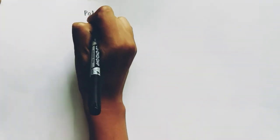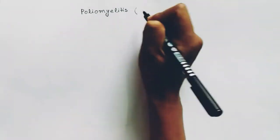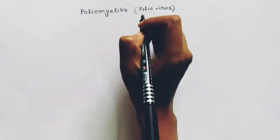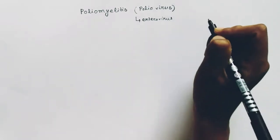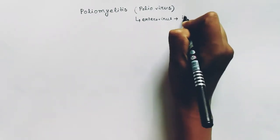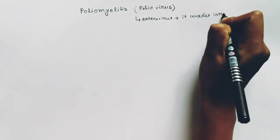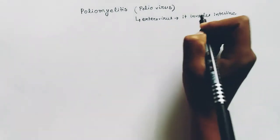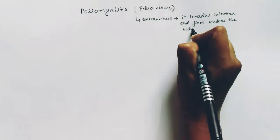In this video we are going to talk about poliomyelitis. It is a disease caused by the poliovirus. This poliovirus is a RNA single-stranded virus and it is also called enterovirus. Entero means intestine — it invades the intestine and first enters our body through the intestine, which is why it is called enterovirus.